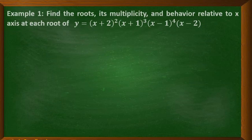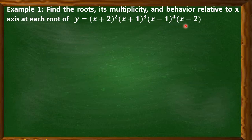Now let's have an example where we are going to determine the roots, their multiplicity, and behavior relative to the x-axis at each root of y = (x+2)²(x+1)³(x-1)⁴(x-2). The given function is in factored form, so it's very easy to determine the roots. I'll be showing you the detailed solution in finding the roots.